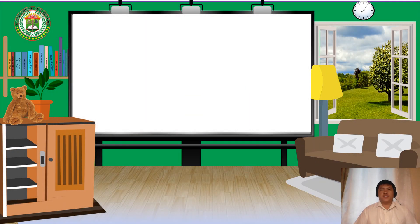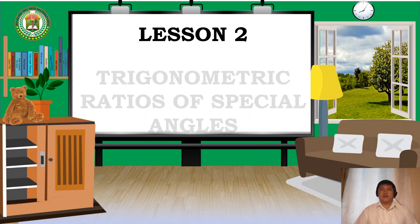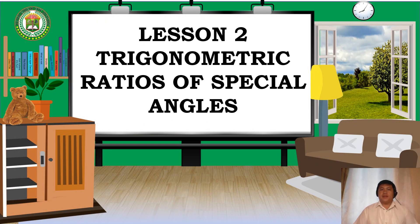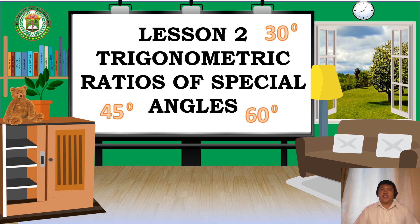Our lesson for today is about trigonometric ratios of special angles: the 30 degrees, 45 degrees, and 60 degrees angle. Are you now excited learning with me?